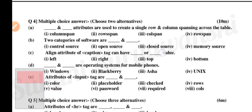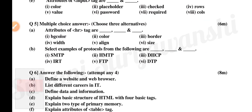Correct answers aata thummi liu shakta. Next aahe, question number 5. We are tikarni, thumala three correct answers niwadai seya hai options madun. If you have three niwadai seya hai, three marka; two niwadai seya hai, two marka; one baru bradai seya hai, one marka. First aahe, attributes of HR tag are: bg color, color, border, width, align, size. B, select examples of protocols: SMTP, HMTP, DHCP, IRT, FTP, DTP.